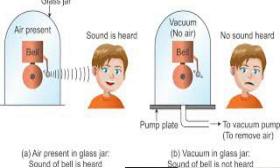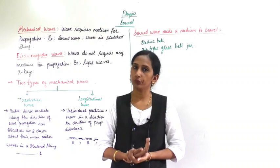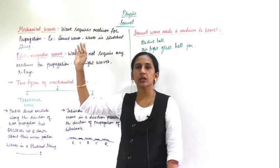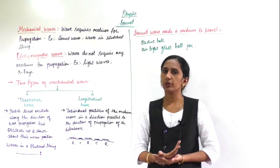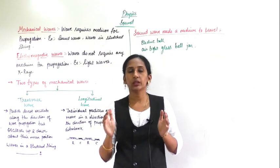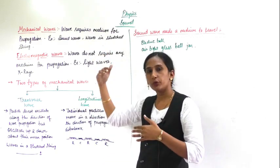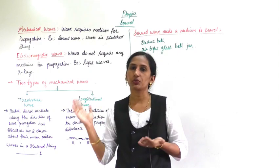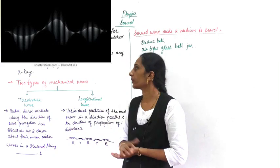Now, as I have explained, sound needs a medium. Sound is a wave — which type of wave it is, that is what you are going to study here. We will study two types of waves: mechanical waves and electromagnetic waves. In mechanical waves, if any wave needs a medium for propagation, then such a wave is called a mechanical wave. The biggest example we are studying here is the sound wave, which needs a medium for propagation.